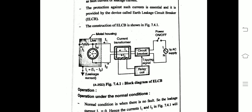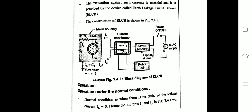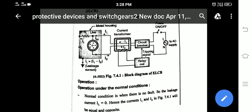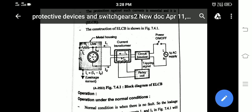The load current is normally equal to i1 minus i2, meaning the incoming current i1 is equal to the outgoing current i2. The metal housing of electrical appliances is always connected to earth, so if the user touches the metal housing there is absolutely no possibility of receiving a shock.